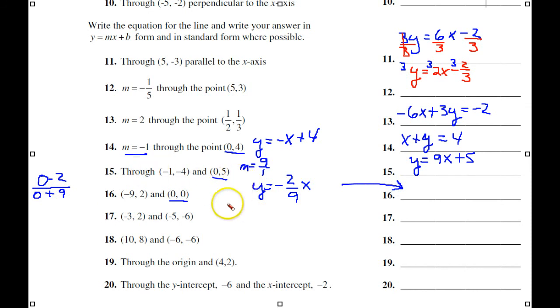And to put it in standard form, multiply everything by 9. So, you now have the 9s over here cancel out. So, this will come over to this side as 2x plus 9y equals 0.